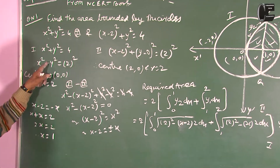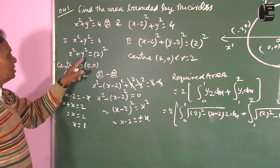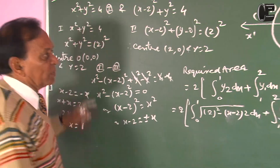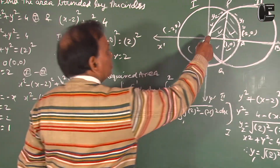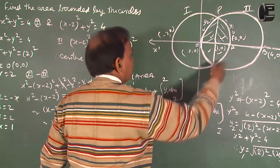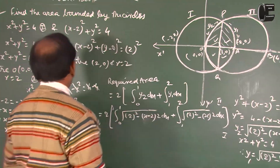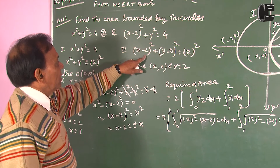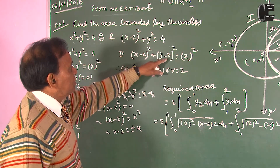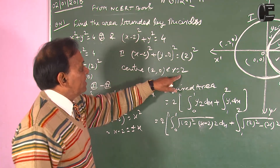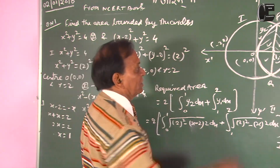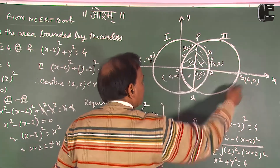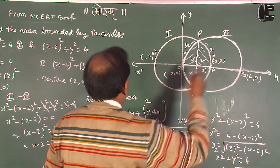For the first circle, center will be (0, 0) and radius will be 2. Similarly, for the second circle, center will be (2, 0) and radius will be 2.